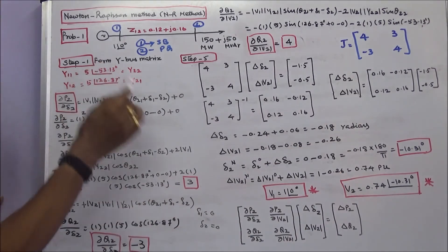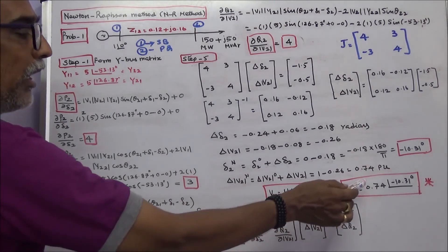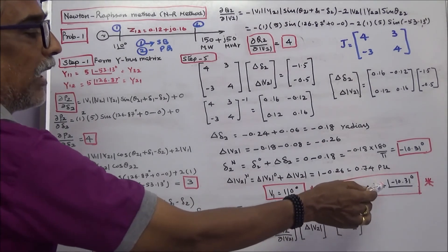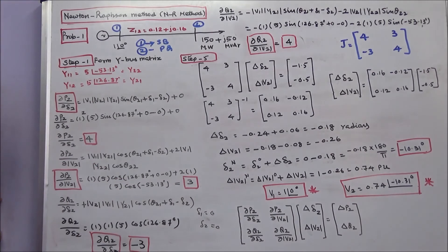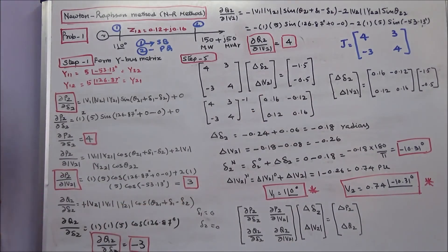Therefore, V1 equals 1∠0°, V2 equals 0.74∠-10.31 degrees. This is the first iteration of the Newton-Raphson method. In the second iteration, we have to use this value and proceed up to convergence. This is how we work out this problem. Thanks for listening.